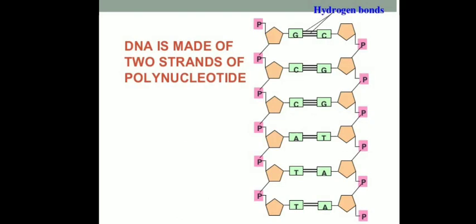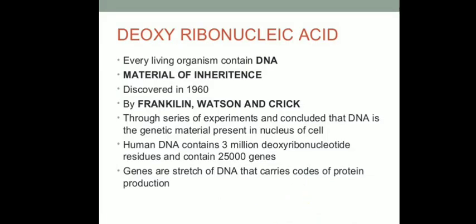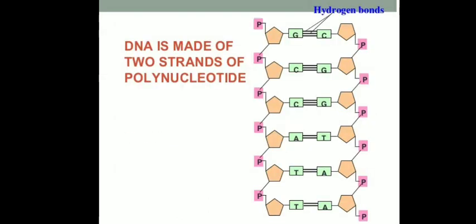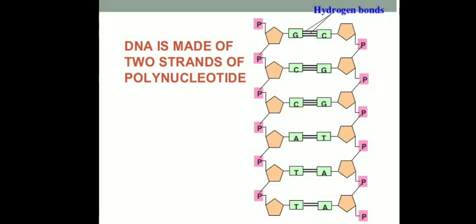Here you can see the exact structure of a strand of polynucleotides. A single nucleotide consists of a pentose sugar, a phosphate group, and a nitrogen base. Such nucleotides are joined to each other to form a long polynucleotide chain, and one polynucleotide chain is joined to another polynucleotide chain which consists of a complementary sequence, with the help of hydrogen bonds.